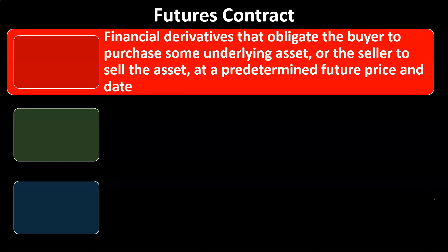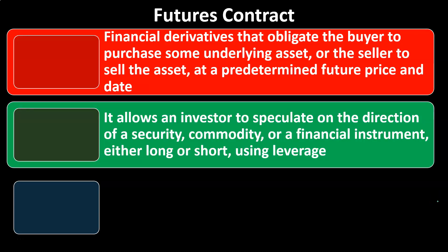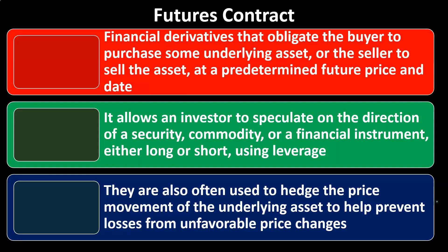Futures contracts are financial derivatives that obligate the buyer to purchase some underlying asset, or the seller to sell the asset, at a predetermined future price and date. They allow an investor to speculate on the direction of a security, commodity, or financial instrument — either long or short — using leverage. They are also often used to hedge the price movement of the underlying asset to help prevent losses from unfavorable price changes.